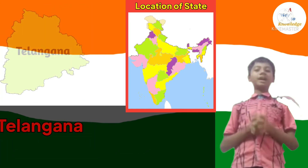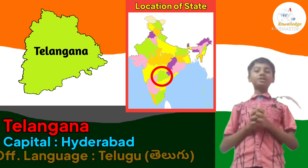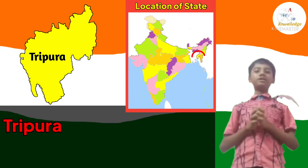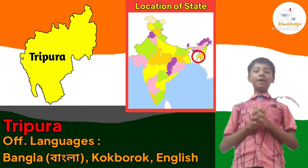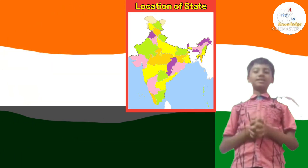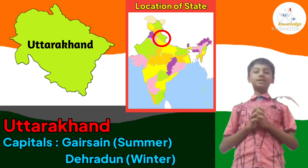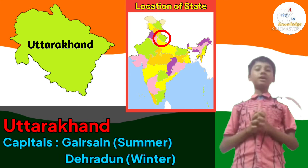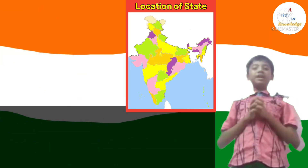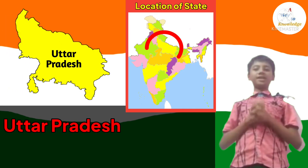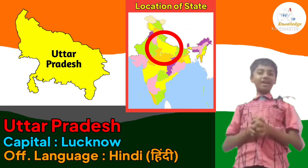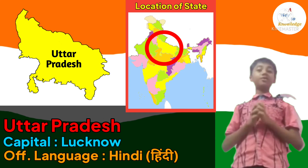State number 24: Telangana. Its capital is Hyderabad and its official language is Telugu. State number 25: Tripura. Its capital is Agartala and Bangla, Kokborok, and English are its official languages. State number 26: Uttarakhand. It has two capitals — Gairsain is the summer capital and Dehradun is the winter capital. Its official language is Hindi. State number 27: Uttar Pradesh. Its capital is Lucknow and its official language is Hindi. Agra, where the Taj Mahal is located, is in Uttar Pradesh.